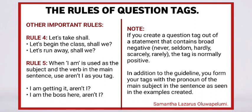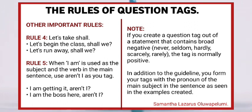Rule five: when 'I am' is used as the subject and the verb in the main sentence, use 'aren't I' as your tag. For example: 'I am getting it. Aren't I?' 'I am the boss here. Aren't I?' 'I am looking good. Aren't I?' 'I am swimming. Aren't I?'